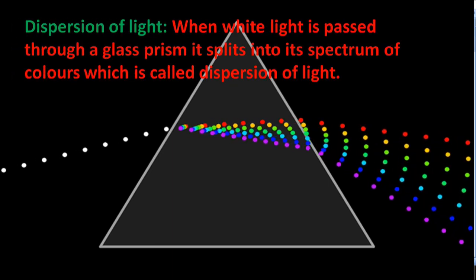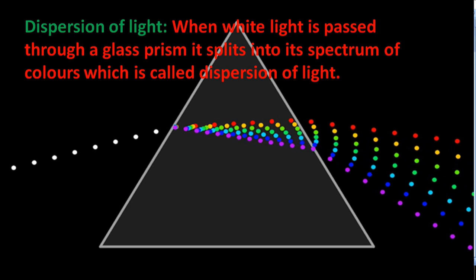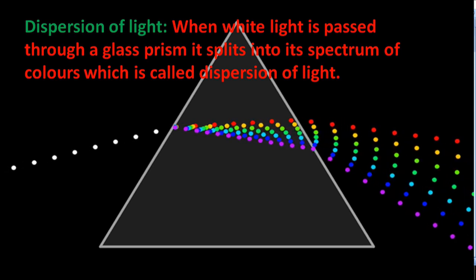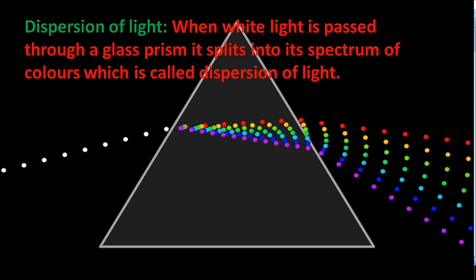Dispersion of light. When white light is passed through a glass prism, it splits into its spectrum of colors, which is called dispersion of light.